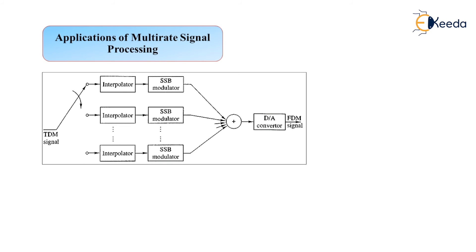This concludes the domain of multi-rate digital signal processing. In upcoming lectures, we will practice filter design and examine the performance of the Quadrature Mirror Filter (QMF) related to digital filter banks, and the performance of the QMF filter bank, using MATLAB. We will then continue with the remaining chapters of advanced digital signal processing, including discrete-time random processes, power spectral estimation, and other topics. Thank you.